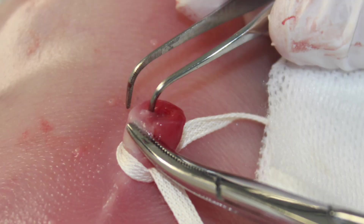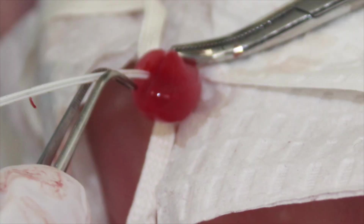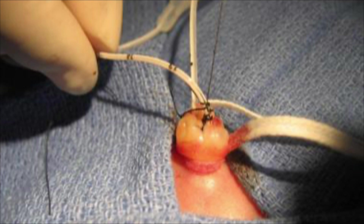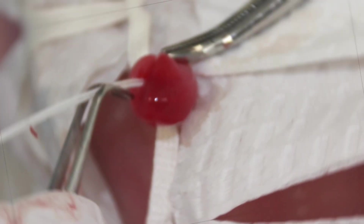Umbilical lines can be used for a variety of reasons in neonates. The artery can be used for arterial blood sampling, arterial pressure monitoring, and exchange transfusion. Whereas the umbilical vein can be used for emergent intravenous access, prolonged parenteral nutrition, long-term IV drugs, hyperosmolar IV fluids, irritating IV meds, difficult or limited IV access, or fluid restriction.